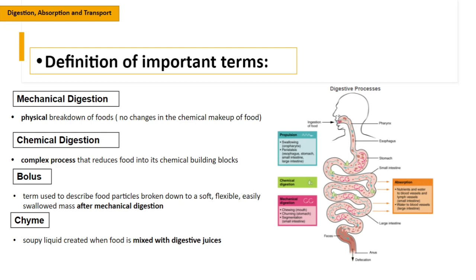Another important terminology is bolus — the term used to describe food particles broken down into a soft, flexible, and easily swallowed mass after mechanical digestion. Please take note that bolus is the term used after mechanical digestion only. After chewing, the food's physical properties change — it becomes mushy in texture. The term for the food at that point is bolus. We also have the terminology chyme.